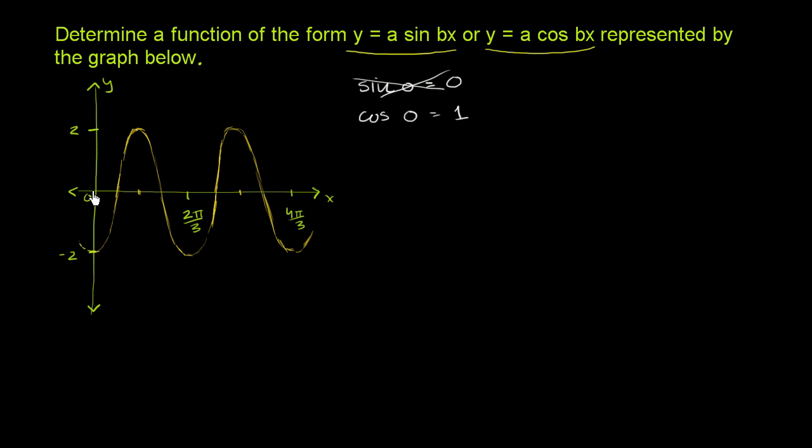You might say, well, the cosine of 0 is 1. The cosine of 0 is 1, but here it's negative 2. But at least if you have a 1, you can then multiply it by something to get to a negative 2. So what we now know is that we are at least of this form, but now we have to figure out what the a's and b's are going to be equal to.